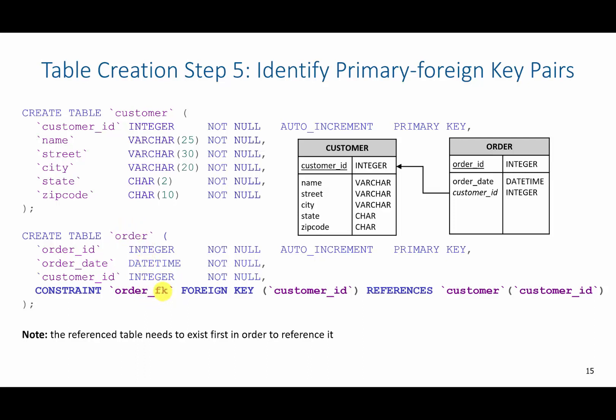If I have more than one foreign key, I'll say foreign key one, foreign key two, and so on. In databases, each constraint name can only be used once. Otherwise, it will throw an error.